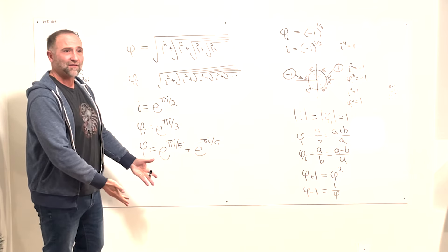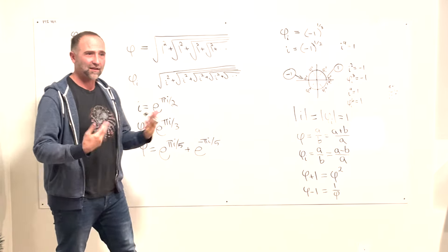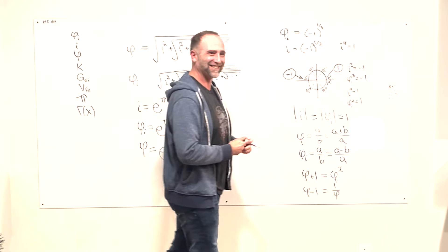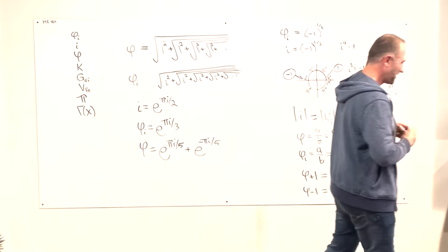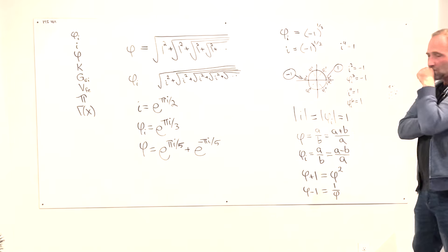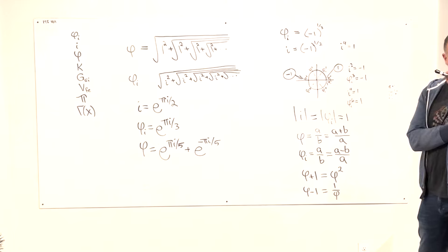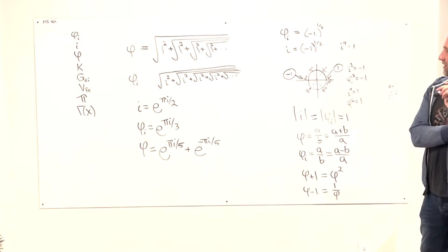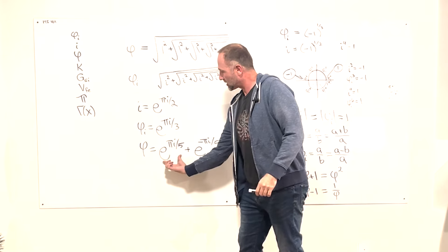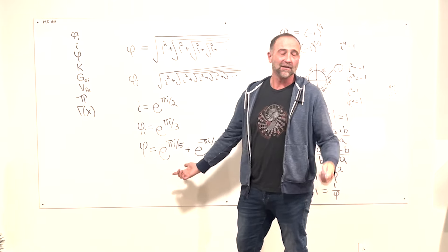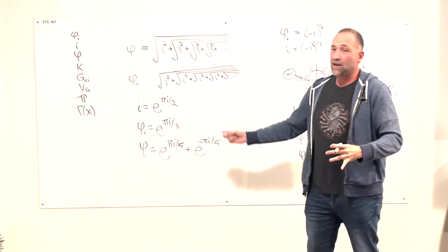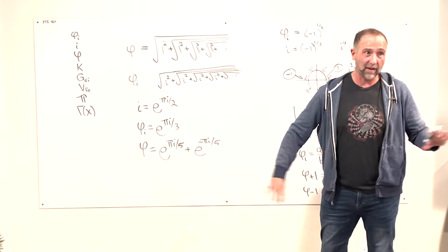These three geometric-algebraic descriptors are defining the actual shape of reality — the physics shape of the universe. Two times e to the π·i over 5 is the complex golden ratio. The imaginary golden ratio is playing an inherent role, and there are many other relationships that all these things touch.